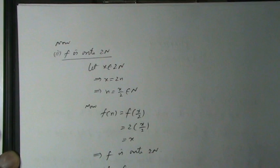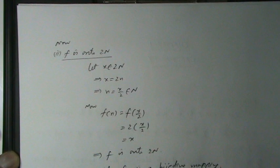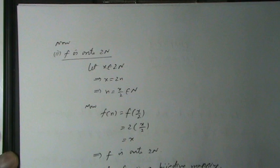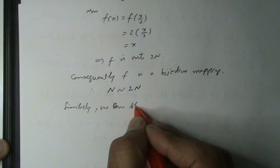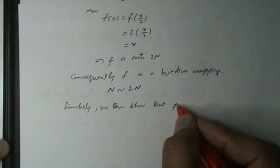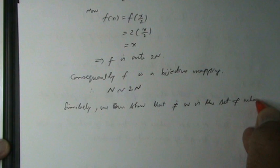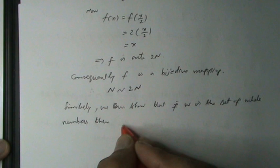Consequently, f is a bijective mapping. Therefore, N ~ 2N — that is, N and 2N are equivalent sets. Similarly, we can show that if W is the set of whole numbers, then W is equivalent to N.